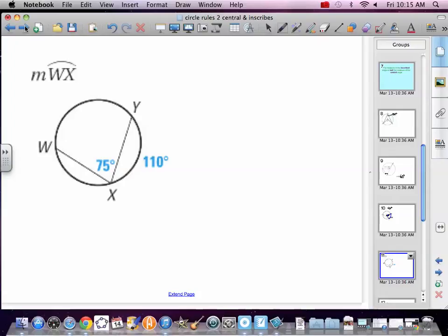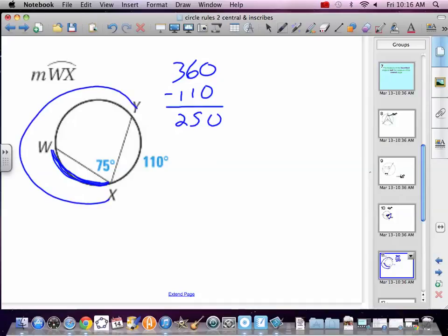So find the measure of arc WX. All right. So we've got an arc on the right that's 110. Circle's 360. So there's 110 that we already know. So from X all the way down around to Y, from X all the way around to Y, it's 250.